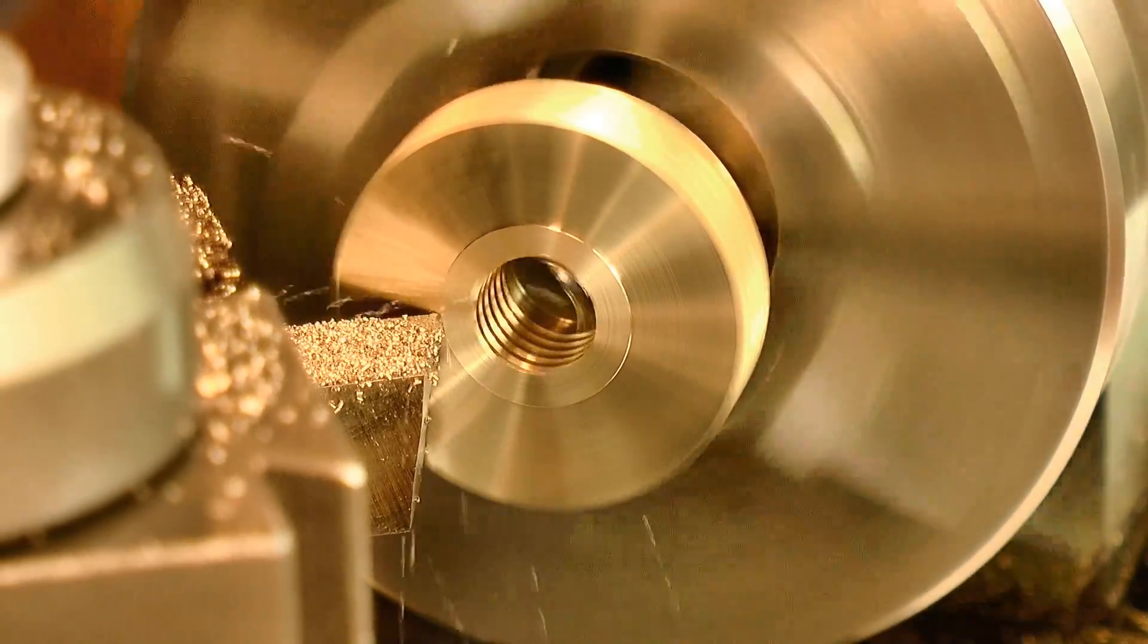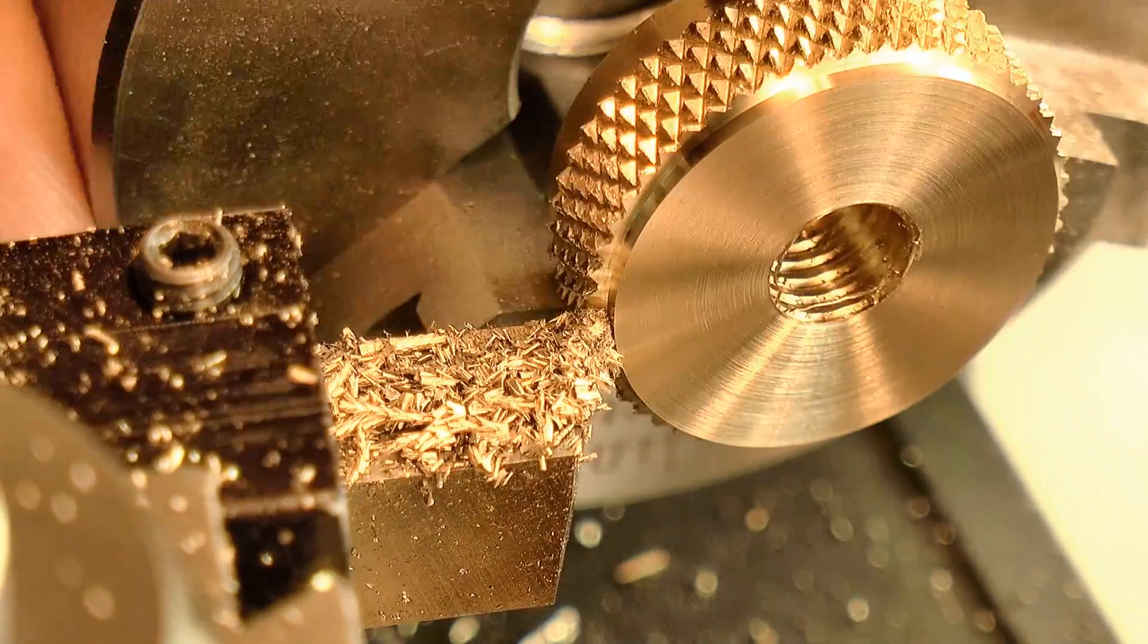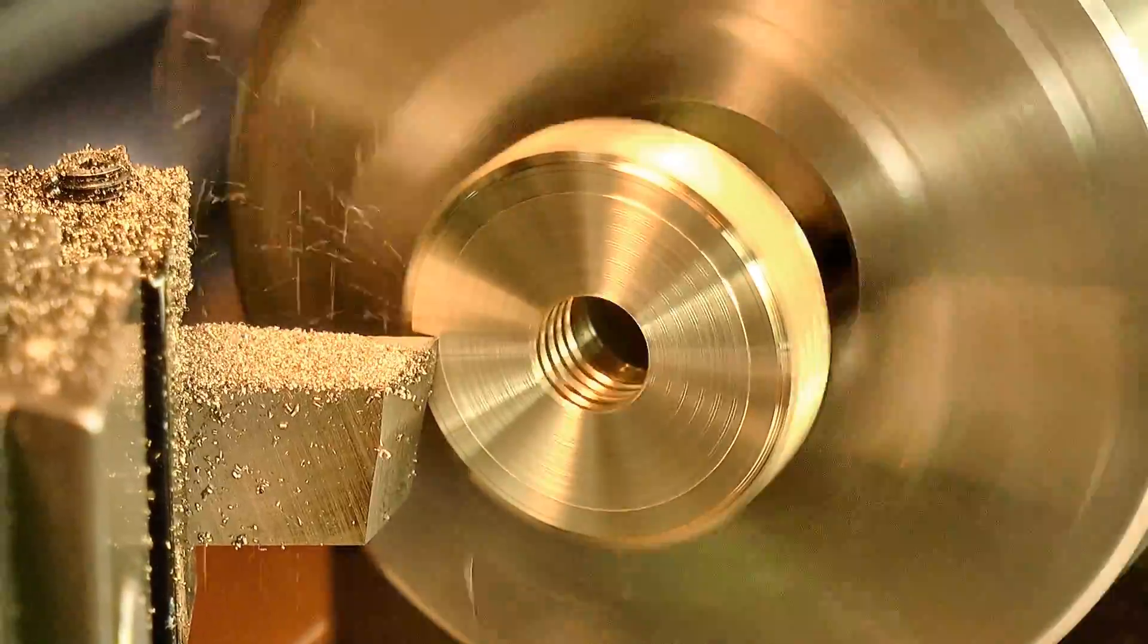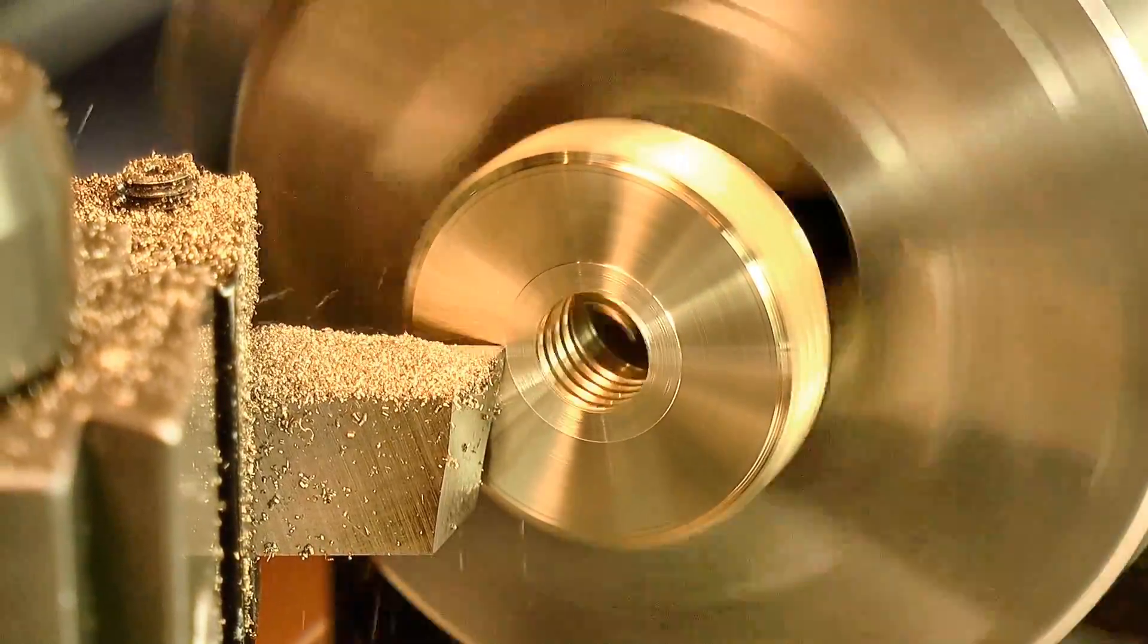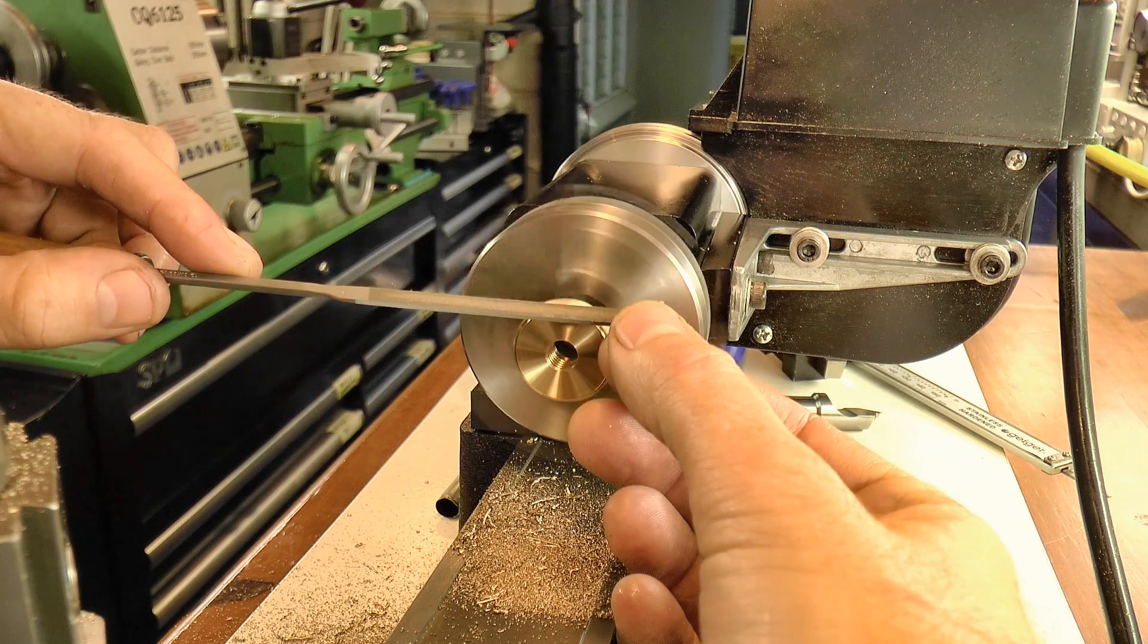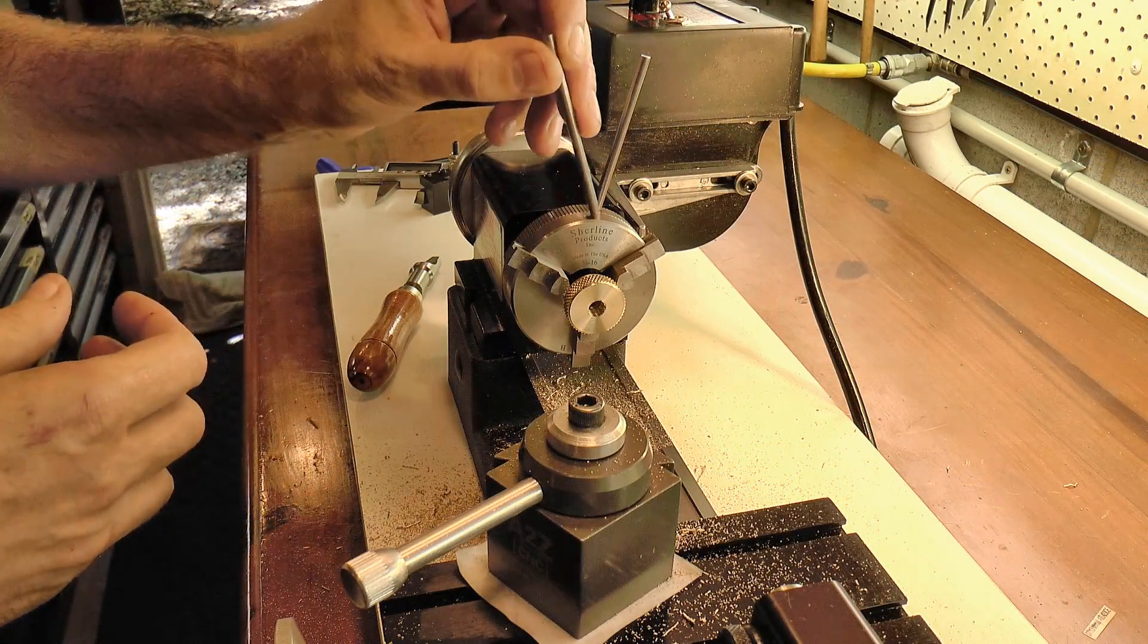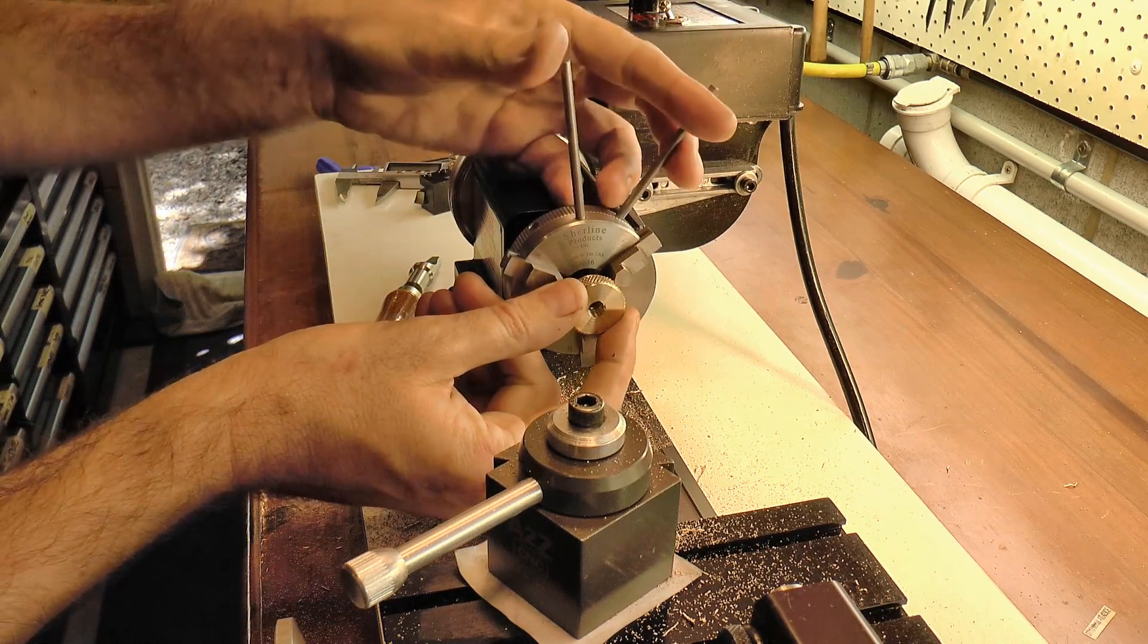And again, I cut into the knurl pattern until it just looked about right. A quick break of the corners with a file, and the nut's almost done. The inside edges just need a quick touch with the countersink to finish the part off.